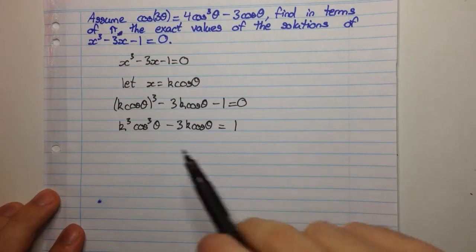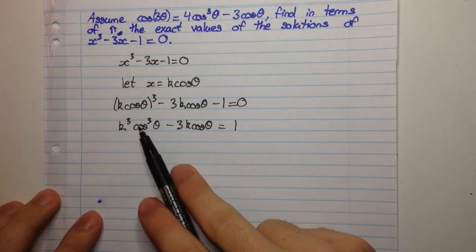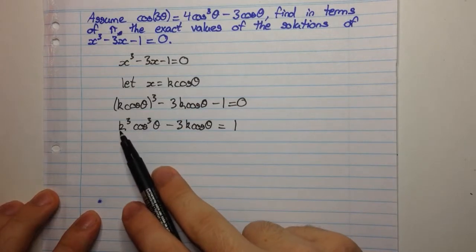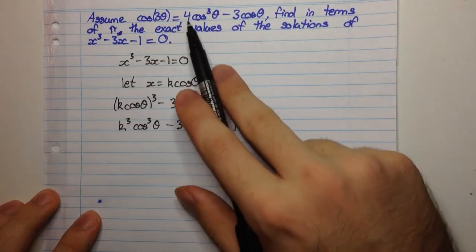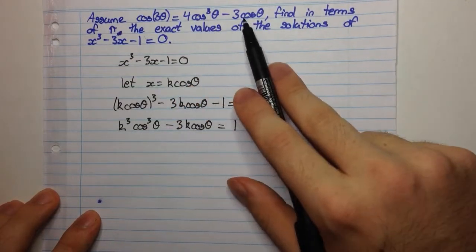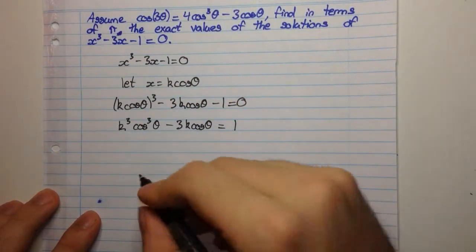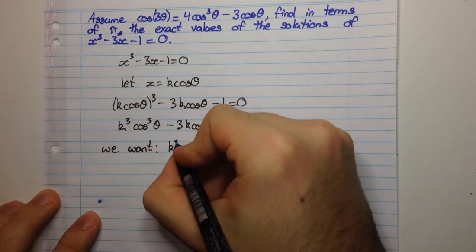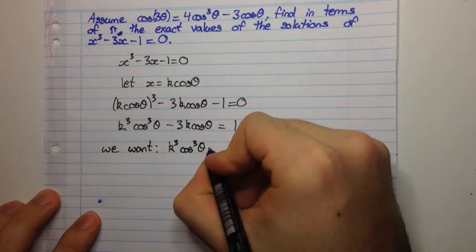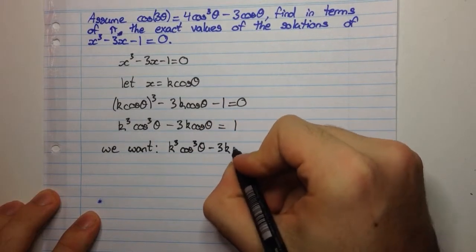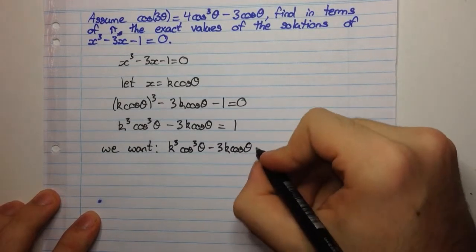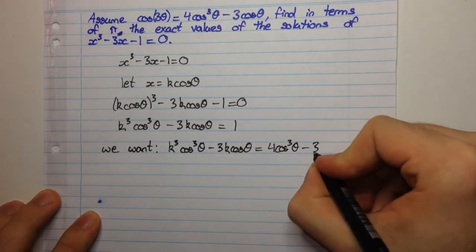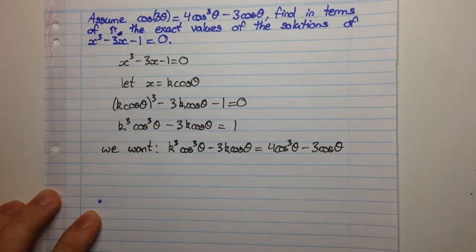So now we have an expression of the form with cos³θ and cosθ in it. Now we want to find a value of k so that this expression is the same or can be made the same as this expression. So we want k³cos³θ minus 3kcosθ. We want this equal to 4cos³θ minus 3cosθ.